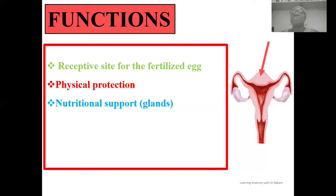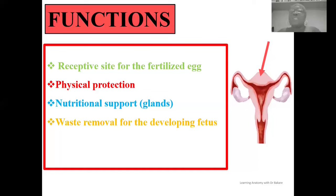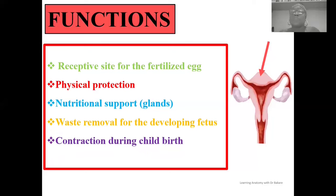The uterus also provides nourishment — nutritional support — through uterine glands within the wall of the uterus, which secrete substances that nourish the developing embryo. It also creates the means through which waste is removed from the developing fetus via the placenta. Additionally, the uterus exhibits contractions during vaginal delivery — the contraction and relaxation of the uterine wall helps push the product of conception out through the vaginal canal.